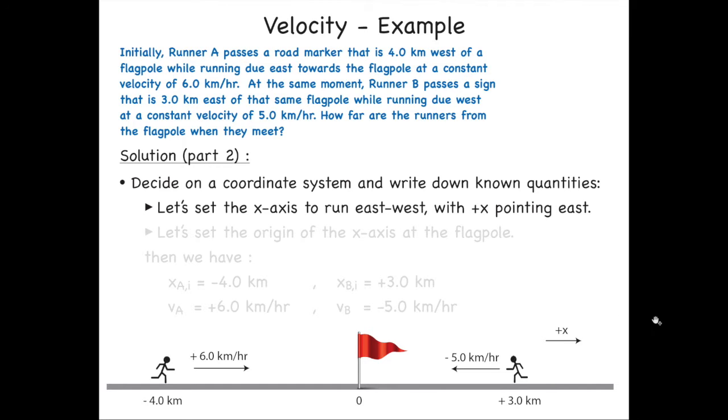The next thing that's useful to do is to draw a little diagram and choose a coordinate system. The other thing that's useful is to write down all known quantities so they're not buried inside of a paragraph. So let's start by setting the x-axis to run east-west, with the positive x pointing to the right or east. We'll set the origin at the flag. We can choose our origin anywhere we like. You could have chosen the origin to be where the first runner is or even at the second runner. The math will all work out, but this choice works conveniently.